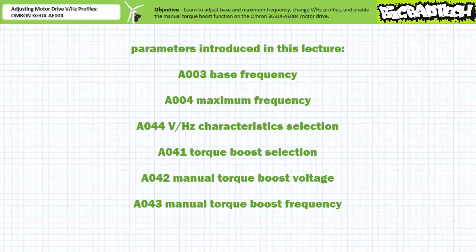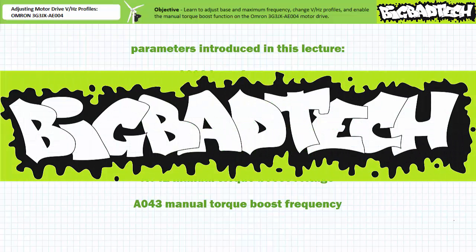That's about it for this quick applications exercise. We learned to change base and maximum frequency, as well as change volts per hertz profiles on the OMRON 3G3JX AE004 motor drive. We learned this particular motor drive has three available volts per hertz profiles — linear, reduced torque, and special reduced torque — as well as a fourth secret bonus torque boost function. Remember to review these concepts as often as you need to really drive it home. Imagine how well lab will go if you know what you're doing. Thank you very much for your attention and interest. We'll see you again during the next lecture of our series. Remember to tell your lazy lab partner about this resource, and be sure to check out the Big Bad Tech channel for additional resources and updates.